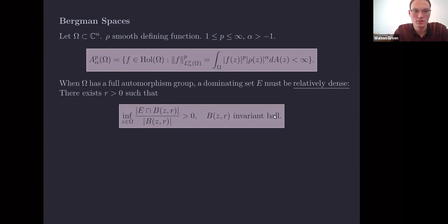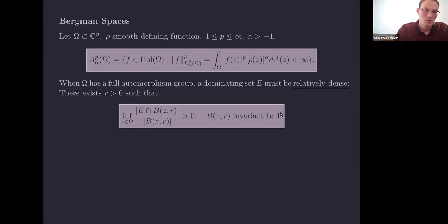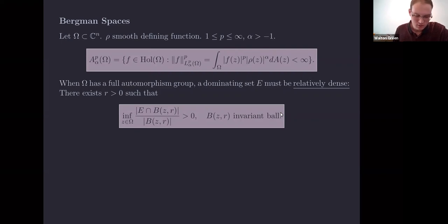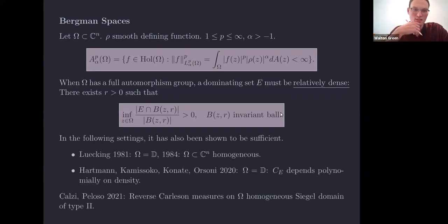If the domain Omega has a nice group structure, the dominating set problem becomes slightly simpler. There is an immediate necessary condition: E must be relatively dense. Relative density means we take our set E and test it over some collection of balls B(z,r) — balls that are invariant under the automorphisms of Omega. It is simple to check this condition is necessary to be a dominating set, and it has been shown to be sufficient in many cases.